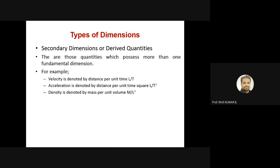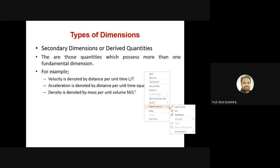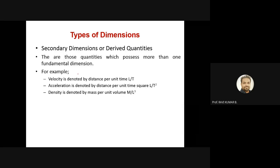Velocity is denoted by distance per unit of time, so in terms of fundamental properties it will have L and T. Acceleration is change in velocity with respect to time, so one more variant of time comes in — that becomes L T⁻². For density, it will have only M and L: mass per unit of volume, which gives M L⁻³. So velocity, density, and acceleration — all involving more than one fundamental quantity — are called derived quantities or secondary dimensions.